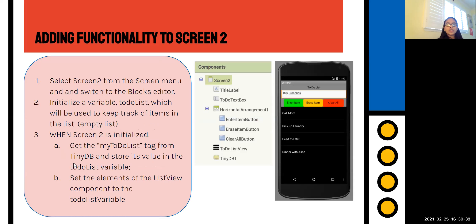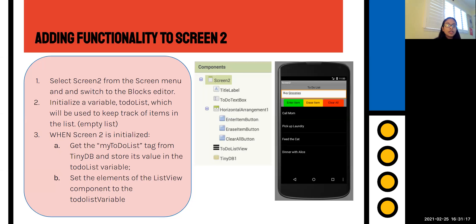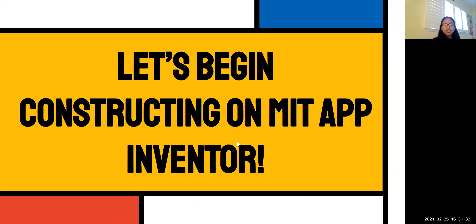Now, adding functionality to Screen 2. This one has a whole bunch of functionality since we have three buttons and text inputs. The overview is: we're going to initialize a variable 'ToDoList' to keep track of items in the list, which starts empty. When Screen 2 is initialized, we get the 'my to do list' tag from TinyDB and store its value into the ToDoList variable. Then we set the elements of the list view component to the ToDoList variable.